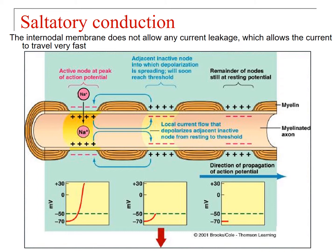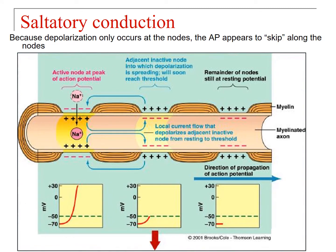The internodal membrane — the area underneath the myelinating cell — is wrapped tightly enough to prevent any current leakage, which allows the current to go really fast. Because depolarization only occurs at the nodes, the action potential appears to skip along the nodes. You see slow movement at the nodes of Ranvier and the signal appears to skip between them, because the diffusion of sodium underneath the cells happens very fast.